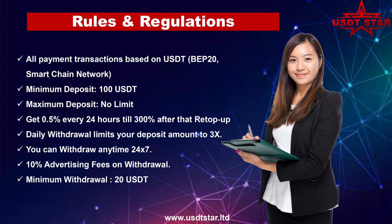Regarding rules and regulations: all transactions are based on USDT via the BEP20 or Smart Chain network. The minimum deposit is 100 USDT with no maximum limit. Daily income is 0.5% every 24 hours until 300% is reached, after which you must re-top up. The daily withdrawal limit is up to 3x your deposit amount, and you can withdraw anytime, anywhere. There is a 10% withdrawal fee used for advertising, and the minimum withdrawal is 20 USDT.